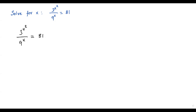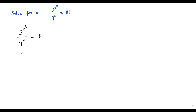The base here is 3, the base here is 9, the base here is 81 — all of them are powers of 3. We already have 3, but 9 can be written as 3 squared and 81 can be written as 3 to the 4th power. So we have 3 to the power x squared over 3 squared to the power x equals 3 to the 4th power.